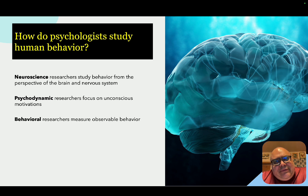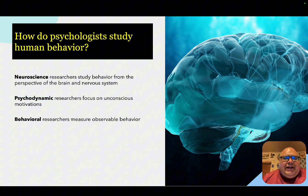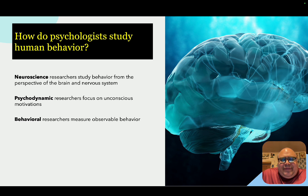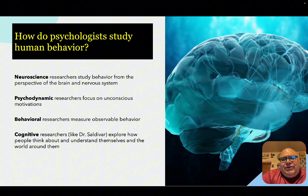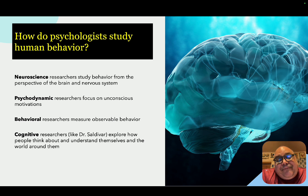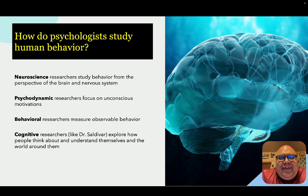Behavioral researchers use different kinds of research designs — especially experimental designs — to measure observable behavior. This is typically what people picture from movies and TV: a psychologist in a white lab coat putting rats through a maze or having humans solve puzzles and timing how long it takes. Cognitive researchers, like myself, explore how people think, understand, and learn about themselves and the world. Since we can't directly observe the brain in real time, we study cognition indirectly by asking questions and having people communicate what they're thinking and how they're learning.